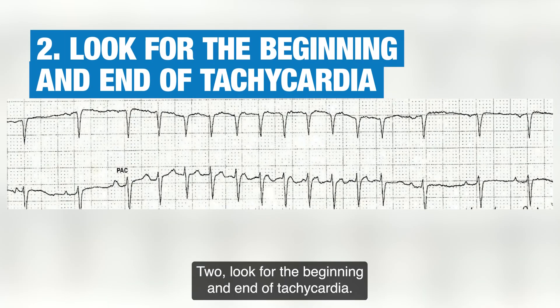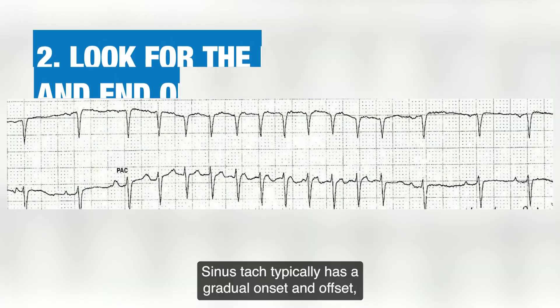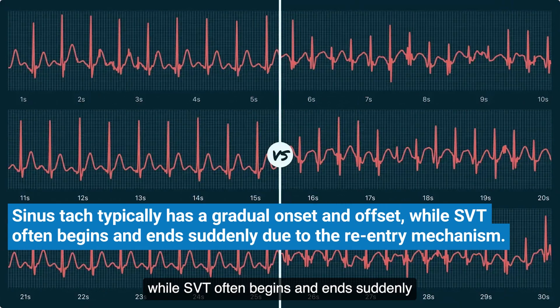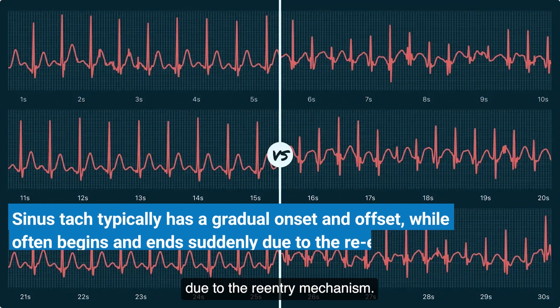Tip 2: Look for the beginning and end of tachycardia. Sinus tach typically has a gradual onset and offset, while SVT often begins and ends suddenly due to the reentry mechanism.